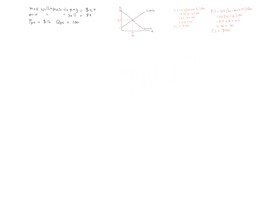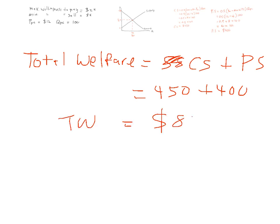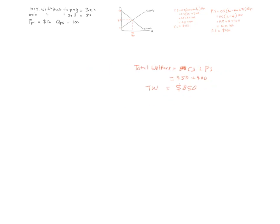Total welfare equals consumer surplus plus producer surplus: $450 plus $400, so total welfare equals $850. This is the efficient outcome under perfect competition.